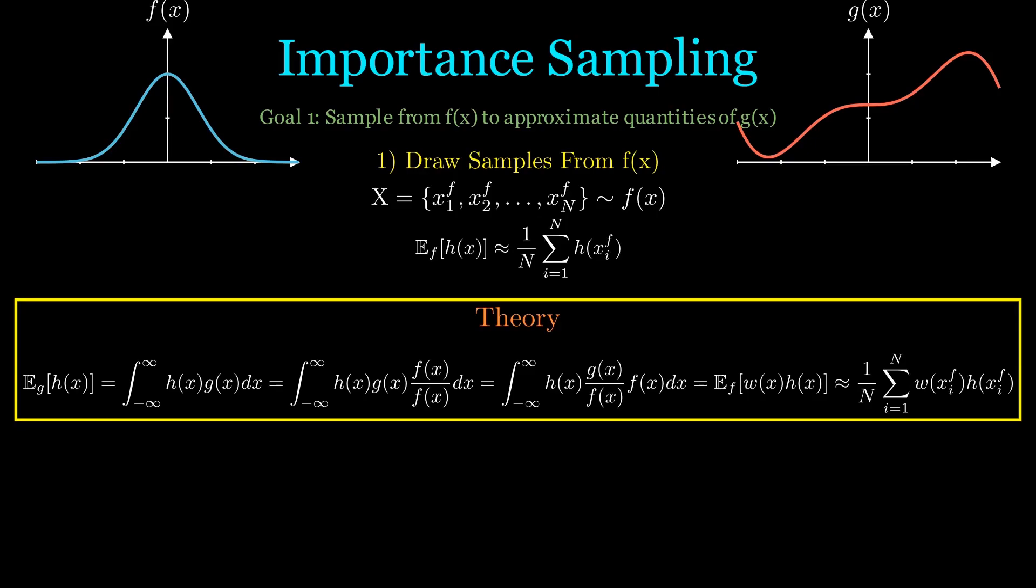Also note that w(x) is called the importance factor or the importance weight. One key assumption is that g(x) greater than zero implies f(x) greater than zero, because if we are approximating g(x), f(x) needs to be able to sample from that area or else it just doesn't make sense. Also note that we don't need to worry about dividing by f(x) equal to zero, since the samples we generate from f(x) have non-zero probability.